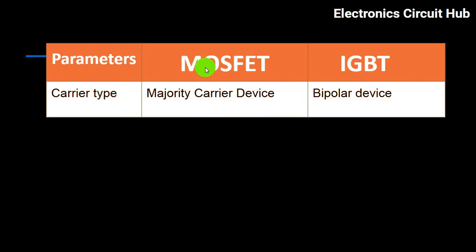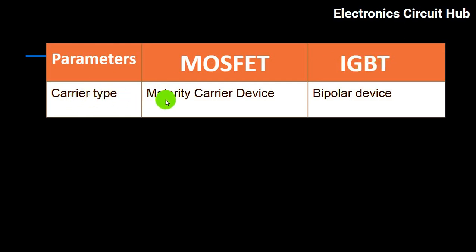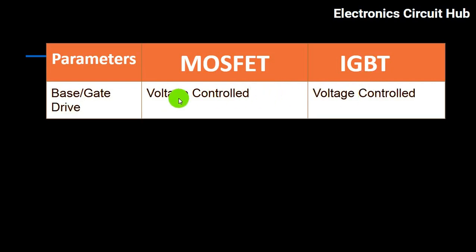MOSFET stands for Metal Oxide Semiconductor Field Effect Transistor, and IGBT stands for Insulated Gate Bipolar Transistor. MOSFET is a majority carrier device, while IGBT is a bipolar device. Both are voltage controlled in terms of gate drive.